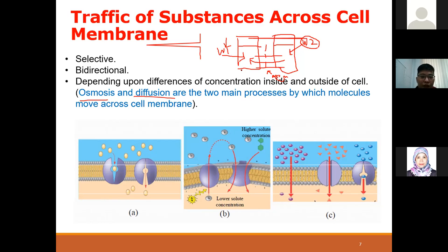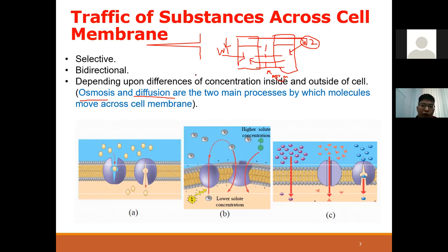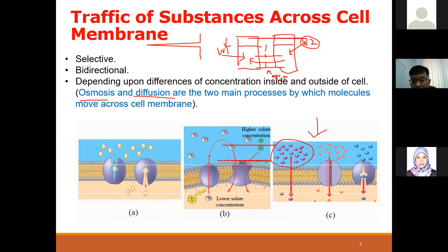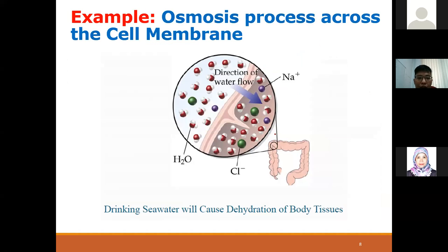We will look into osmosis again when we talk about the RO membrane. Diffusion, on the other hand, is the movement of solute from a region of higher concentration to lower concentration. To illustrate: you have a lot of solute dissolved in water with very high concentration, and it moves to a region with lower concentration of solute. This is what we call diffusion.